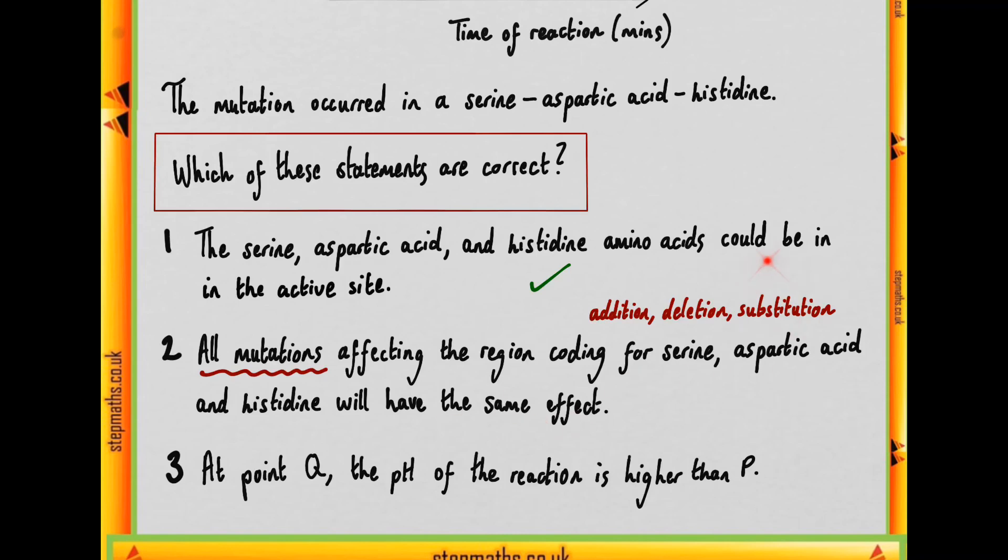Some, for example, might be a silent substitution mutation. Because of the degeneracy of the genetic code, you might have a situation where you change out one of the bases, but nonetheless the new codon codes for the original amino acid because a number of different codons can code for the same amino acid. So we can say that's wrong.